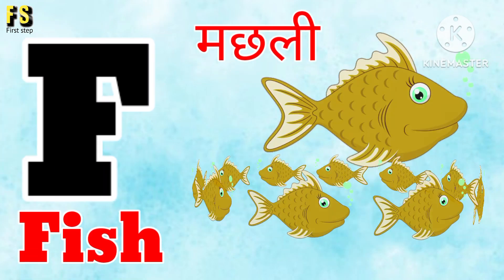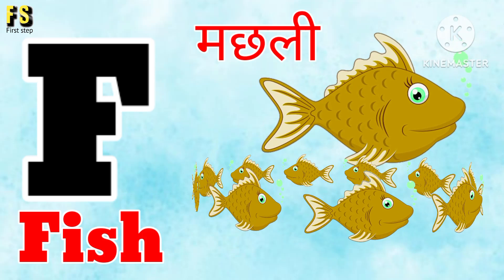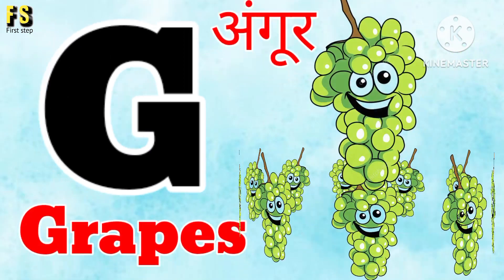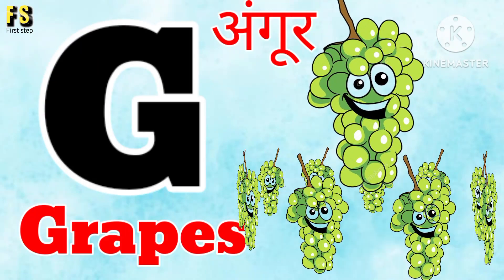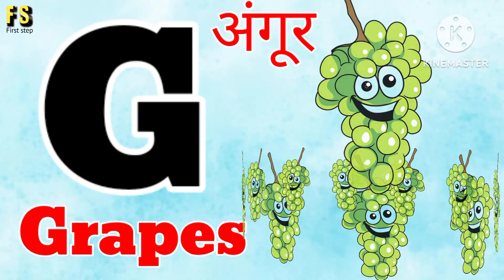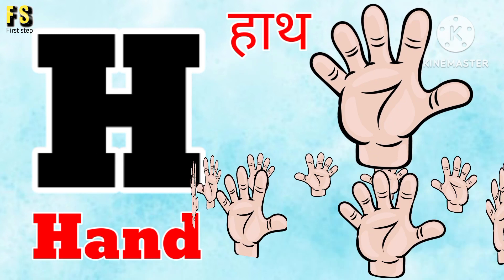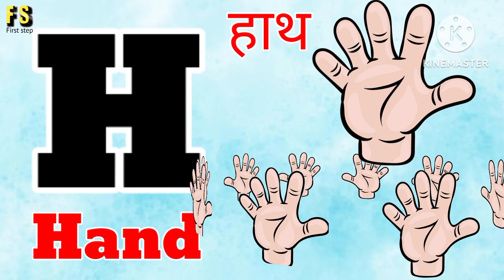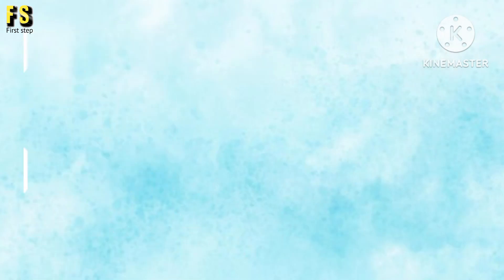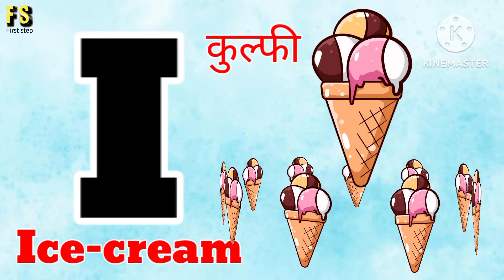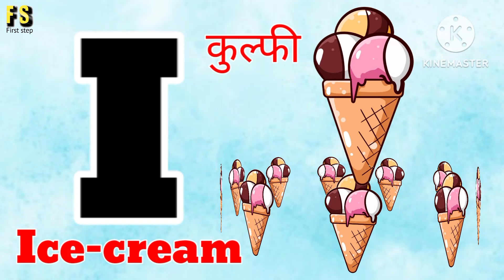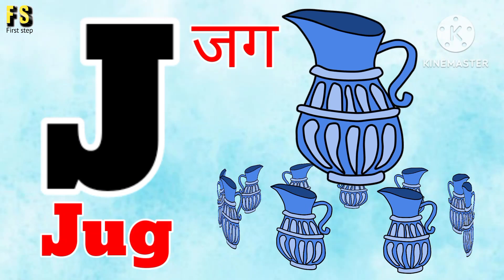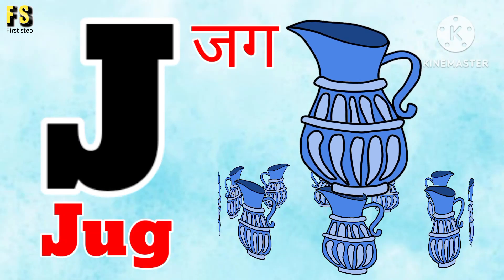F for fish, G for wilt, H for hand, I for ice cream, J for jug.